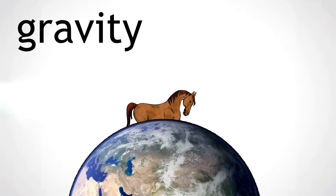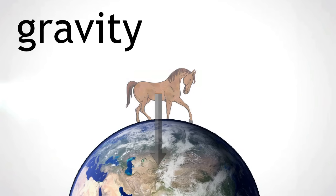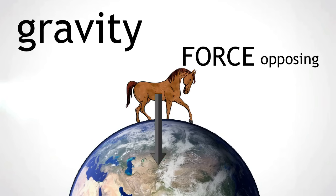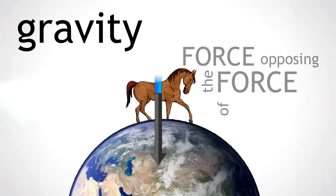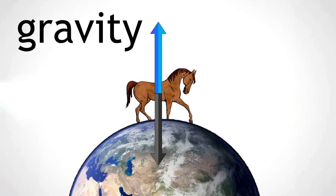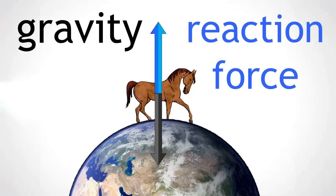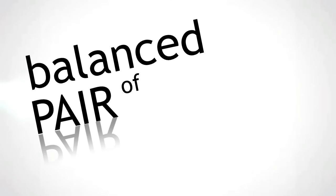If this were the only force acting on the horse, it would sink into the ground. As this is not the case, there must be a force opposing the force of gravity. An arrow is drawn in the opposite direction, but equal in size. This force is called the reaction force. As the reaction force is the same size, but acts in the opposite direction to the horse's weight, these two forces are a balanced pair of forces.